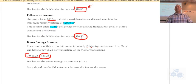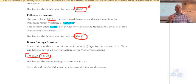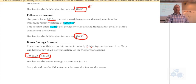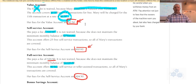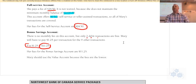With savings accounts, they don't like you dipping in and out — a savings account is meant for putting money in and leaving it there, not for paying bills. A checking account charges a bit more but lets money go in and out freely. So looking at the results, Mary should use the value account because she virtually pays nothing with that level of activity.